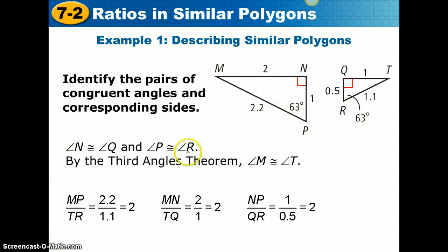The sides that correspond would always be proportional. I'm going to pick a side to start with in one triangle. In this case, MP. It doesn't matter if you follow a particular order, as long as you stick with that order throughout the entirety of your problem. MP to TR: I'm going to write what that ratio is, 2.2 over 1.1, simplifies to 2.